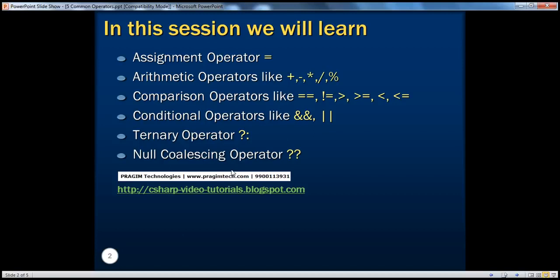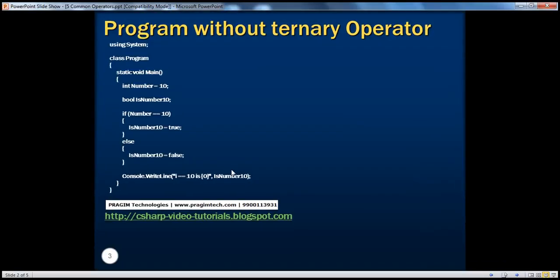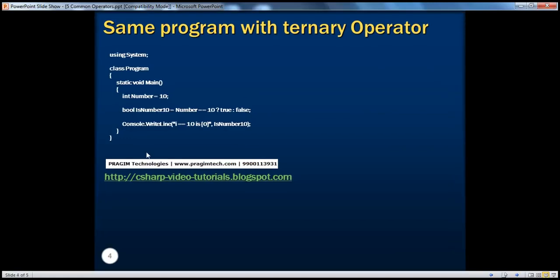The null coalescing operator will be covered in a later session when we talk about nullable data types in C#. We need to understand nullable data types first, and then we will discuss the null coalescing operator. With the ternary operator, we saw that program size is relatively much smaller compared to using multiple if-else lines.